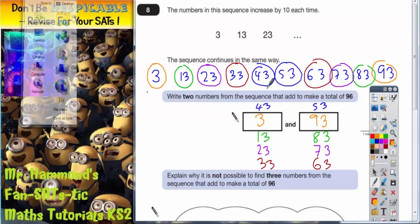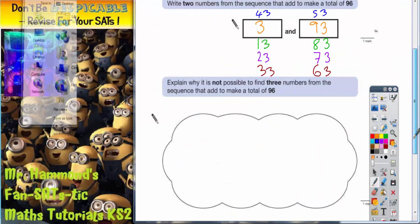You can see that I wrote out more numbers in the sequence to give more numbers to choose from. For the second part of the question, explain why it is not possible to find three numbers from the sequence that add to make a total of 96.